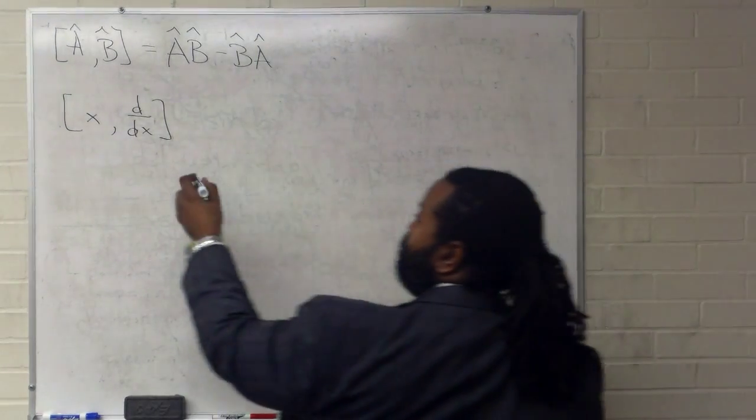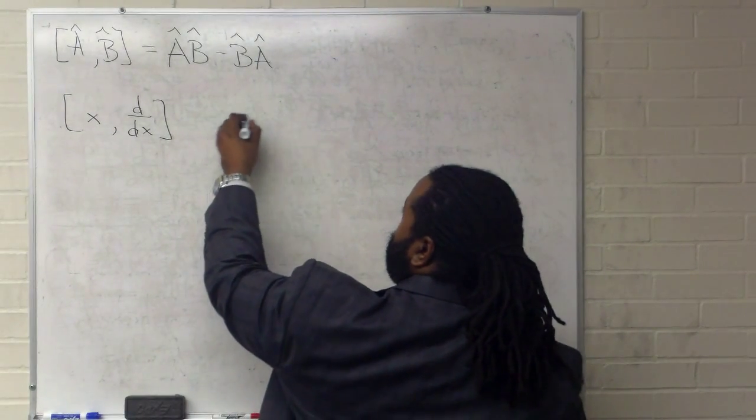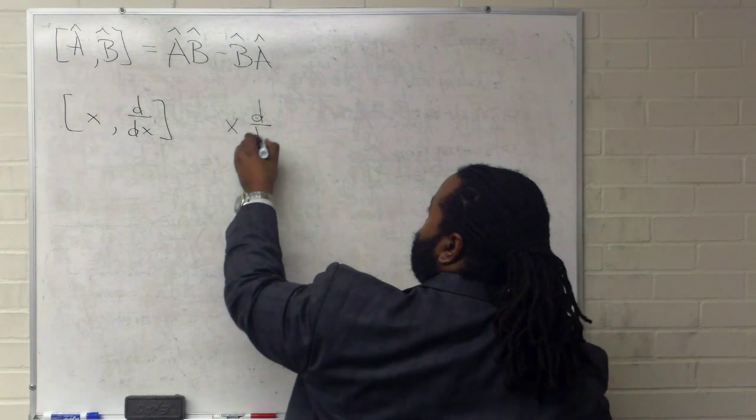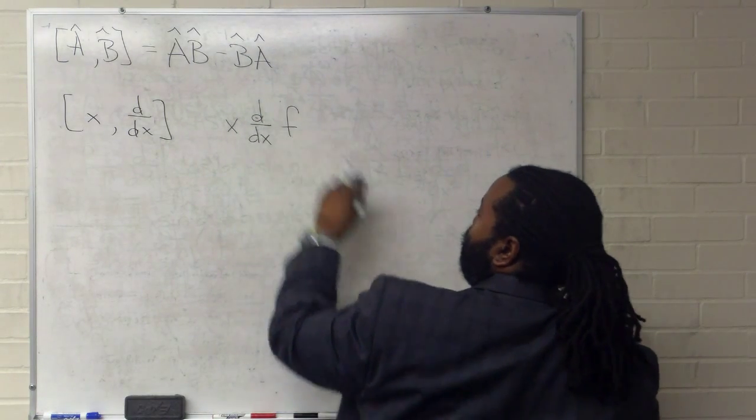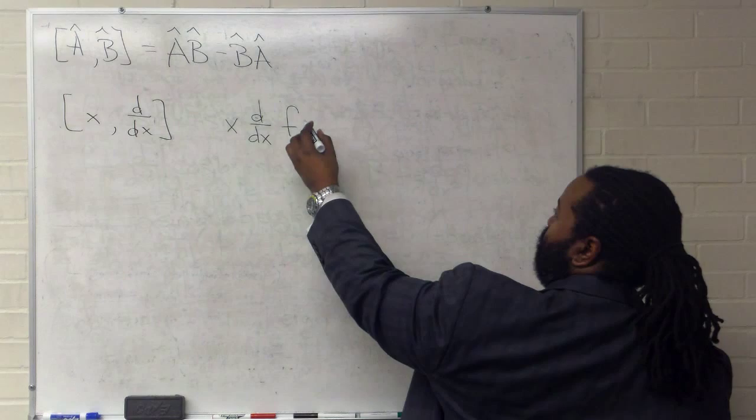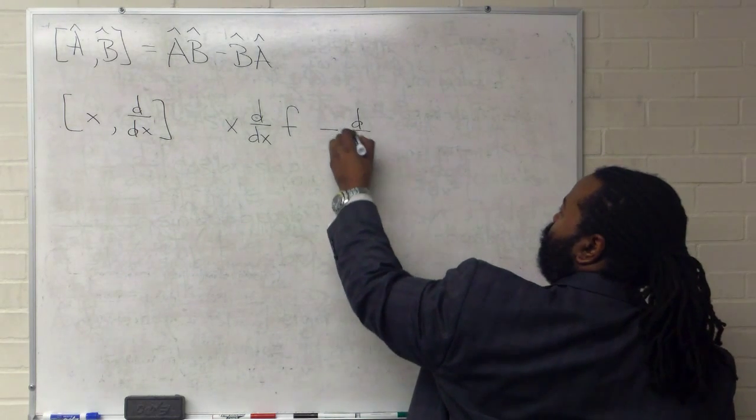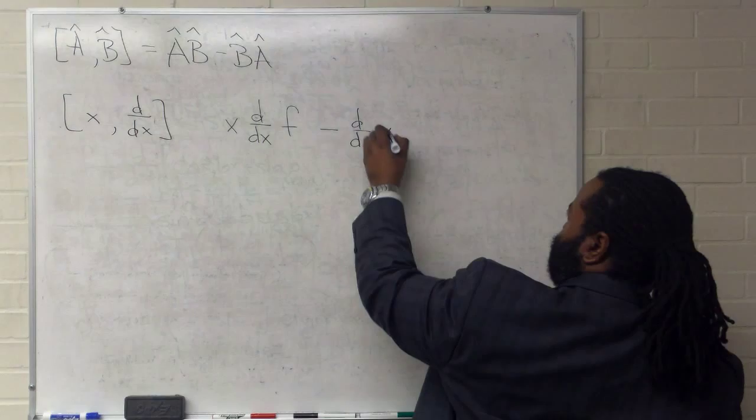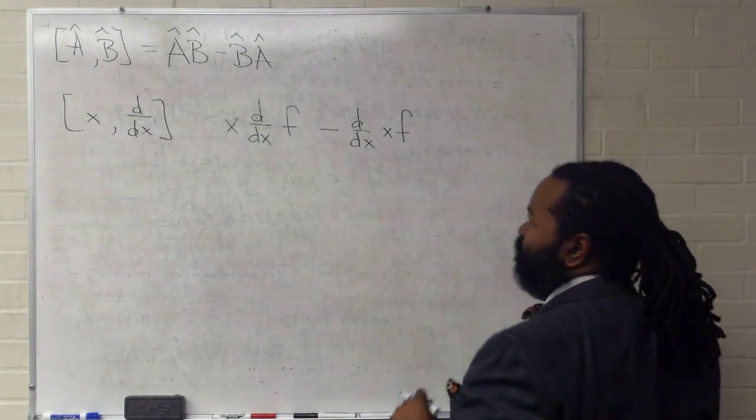In order to do this, we'll need to set up X times the first derivative acting on the function. That's AB minus first derivative, X, and the function.